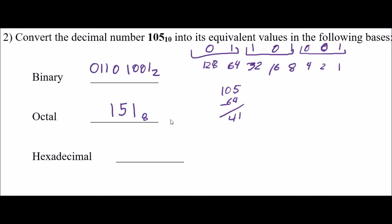To go to base 16, I group it by 4s. The first group of 4: 1s place, 2s place, 4s place, 8s place — I have 8 plus 1, which is a 9. The next group of 4: 1s, 2s, 4s, 8s place — I have 4 plus 2, which is a 6. So 6, 9 — that is my base 16 number.